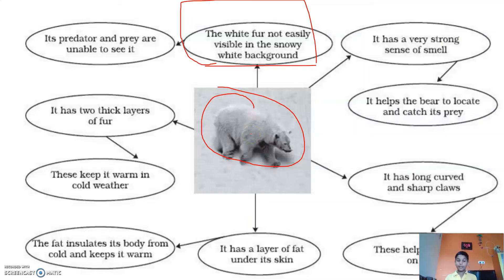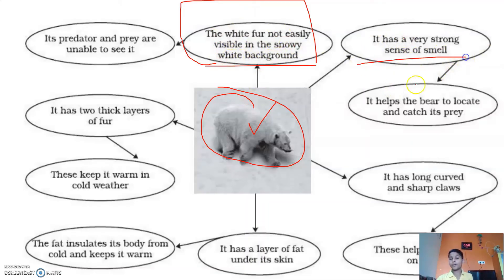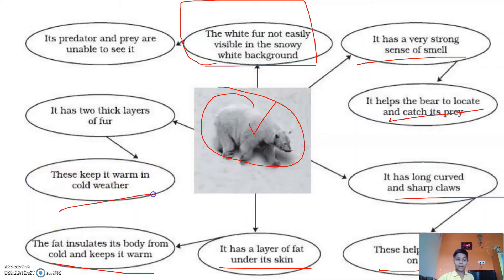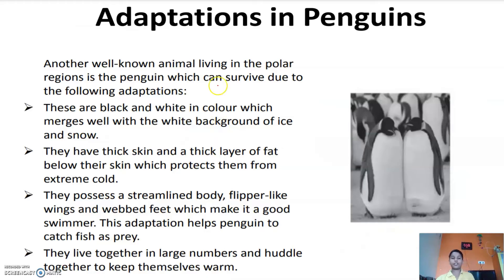In the picture you can see the polar bear. It has white fur that is not easily visible in the snowy background. When enemies like hunters approach, the white fur blends in with the white snow so they cannot be seen easily. It has a strong sense of smell to locate prey, long curved and sharp claws to walk on ice, and a layer of fat that insulates its body from cold and keeps it warm.